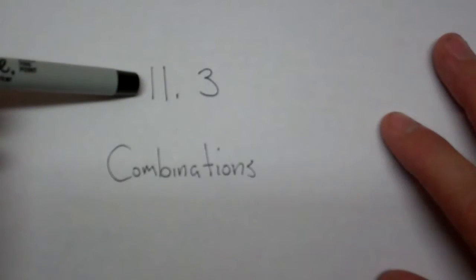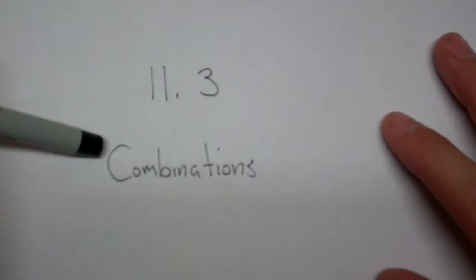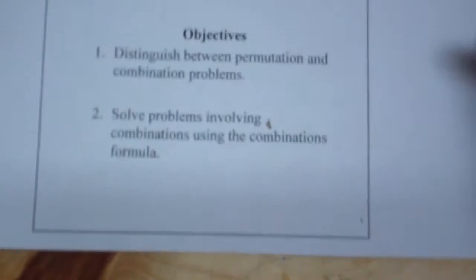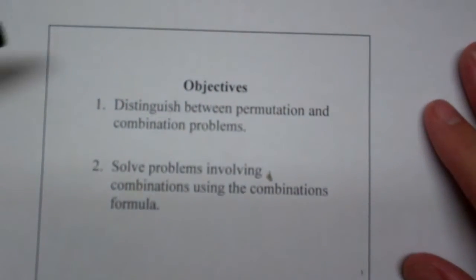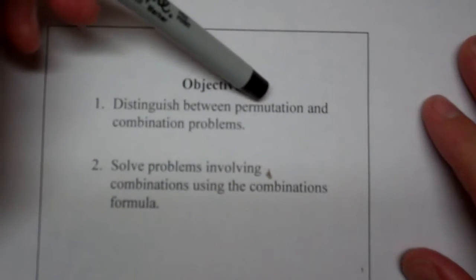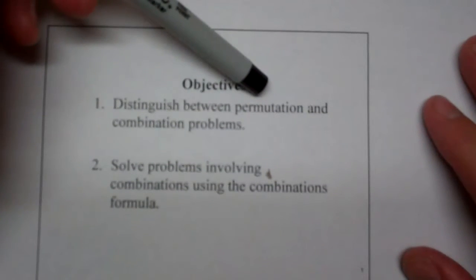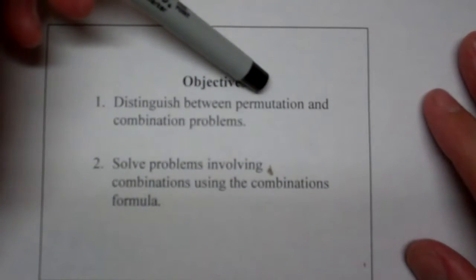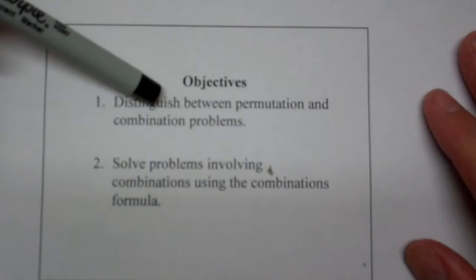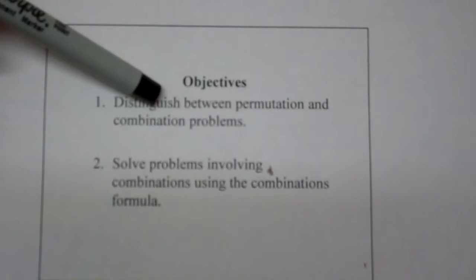Today we're looking at 11.3. We want to talk about combinations. Combinations are a little bit different than permutations, so that leads us to our very first objective. We want to actually distinguish between a permutation, which rank and order matters, and a combination where rank and order do not matter.